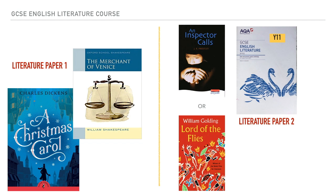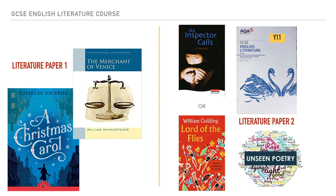We're now starting to work on Literature Paper 2. If you are in P1, you will have studied Lord of the Flies as your modern text. Everybody else will be studying An Inspector Calls as their modern text, and that's the first question you'll answer in Literature Paper 2. Then you'll go on to answer a question on the Power and Conflict poetry in year 11. The final section of the Literature Paper 2 exam is the Unseen Poetry questions — that is section C — and we are going to be studying that now.